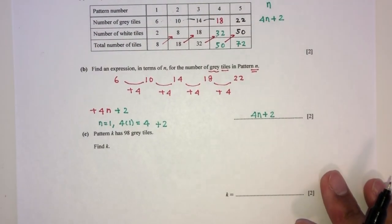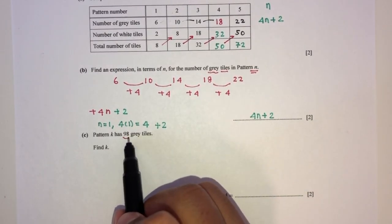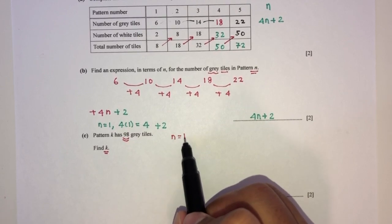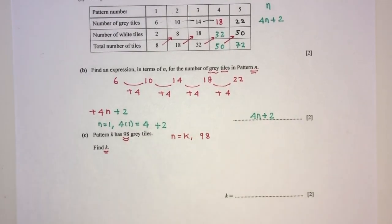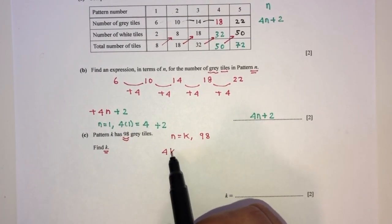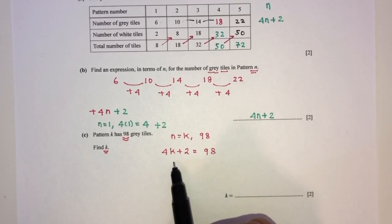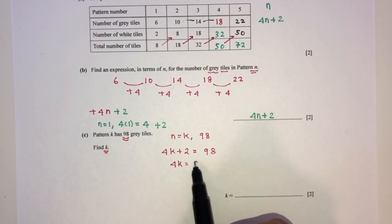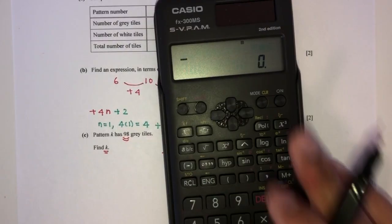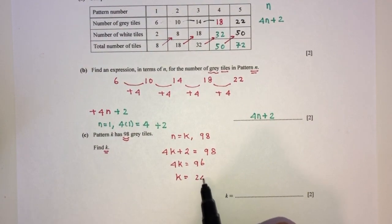For part C, pattern k has 98 gray tiles. When n equals k, the formula gives: 4k plus 2 equals 98, so 4k equals 96, therefore k equals 24. That's your answer for part C.